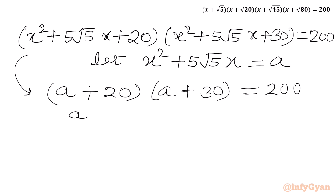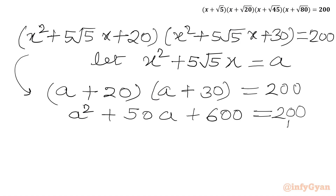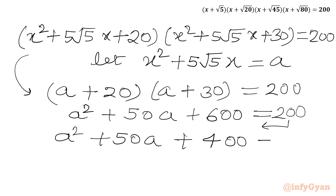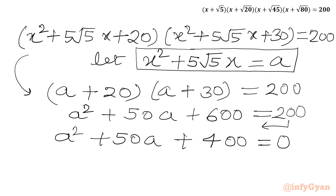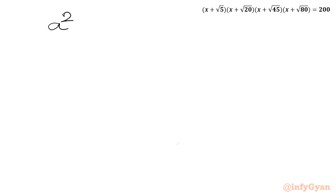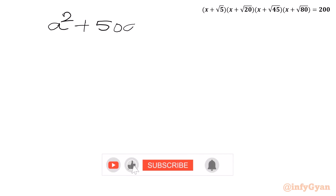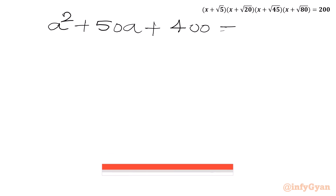Let's expand: a² + 30a + 20a + 600 = 200, which gives a² + 50a + 600 = 200. Taking 200 to the LHS, we get a² + 50a + 400 = 0. Now we have to solve this quadratic equation using factorization.